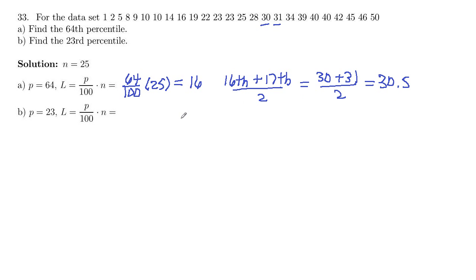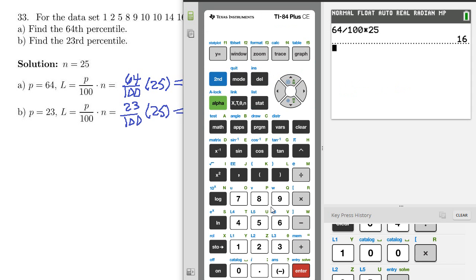And then we want to do the 23rd percentile, so p equals 23. So this will be then 23 divided by 100 times that sample size of 25. Let's go ahead and compute that. So 23 divided by 100 times 25, 5.75.